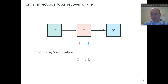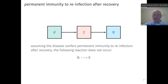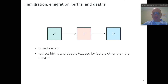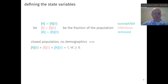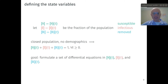Note that we're neglecting an R to S reaction, because we're assuming that an infectious individual who recovers is conferred permanent immunity rather than temporary immunity. Note the absence of any arrows going in or out of the system — it's a batch reactor, so this is a closed system. We're neglecting immigration or emigration, analogous to flow in and out of the reactor, and also neglecting births and deaths caused by factors other than disease. Let S, I, and R be the fraction of the population that is susceptible, infectious, or removed at time t. Because the population is closed and we neglect demographics, the sum of these three state variables is 1.